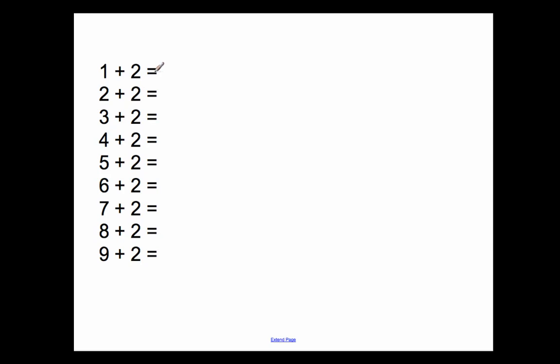You can also use this strategy, the counting on strategy, when you're adding 2 to any number as well. So you'd start at the number that you're given. So start at 1. You would say 1, and then you would count on for two more numbers: 2, 3. These are the next two numbers you would count on. So the answer to this is 3.